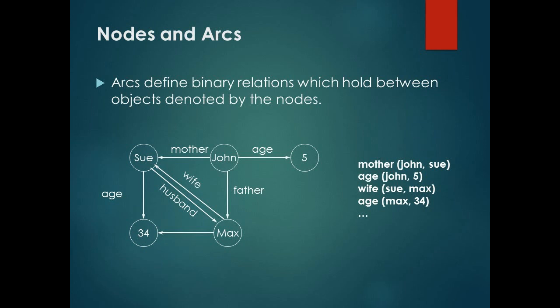Nodes and Arcs. Arcs define binary relations which hold between objects denoted by the nodes. For example: Sue is the mother of John. John's age is 5. John's father is Max. Max is 34. Sue's age is 34. Sue and Max are husband and wife.